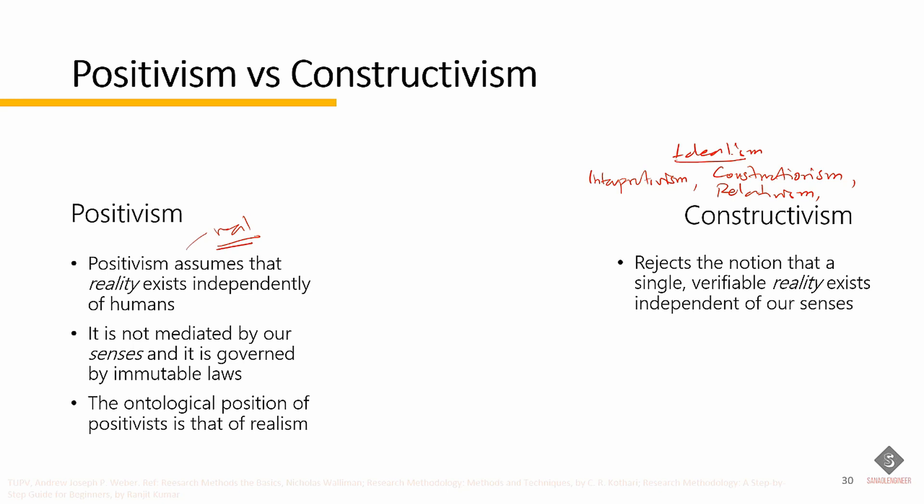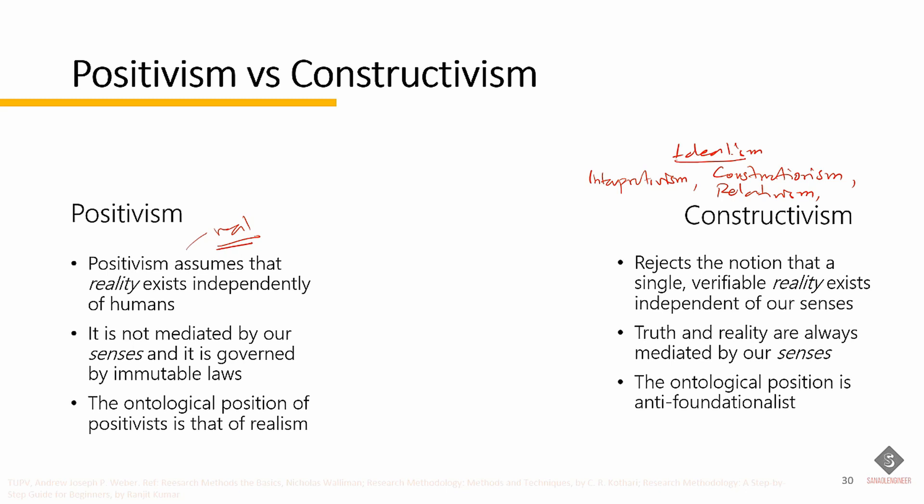We are not neutral, detached observers but part of society. Aside from concentrating on the search for constants in human behavior — the repetitive, predictable, and invariant aspects of society — the researcher does not ignore what is subjective, individual, and creative. For the constructivist or interpretivist, truth and reality are always mediated by our senses. Because truth and reality are created, not discovered, it is not possible to know reality as it is. The ontological position is anti-foundationalist — it refuses to adopt any permanent foundational standards by which truth can be universally known. Instead, interpretivists believe in socially constructed multiple realities.